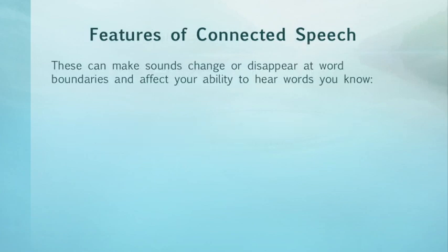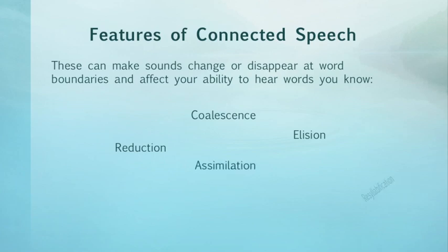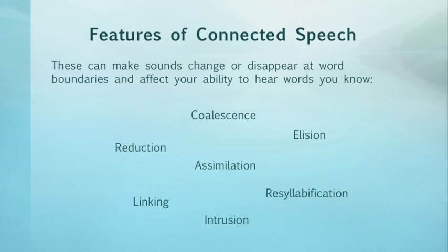Some features of connected speech that can make sounds change or disappear at word boundaries and affect your ability to hear words you know are: coalescence, elision, reduction, assimilation, re-syllabification, linking, and intrusion. Don't worry, I'll explain what each of these means in this series. Awareness of them will improve your ability to hear individual words in the stream of spoken English.